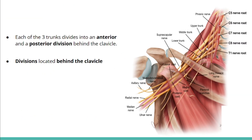Each trunk then divides into anterior and posterior divisions behind the clavicle. Therefore, the divisions are located behind the clavicle.